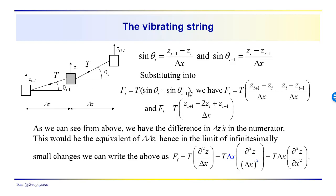The net upward force equals the tension times [(zᵢ₊₁ − zᵢ)/Δx − (zᵢ − zᵢ₋₁)/Δx]. Combining terms, we get T·(zᵢ₊₁ − 2zᵢ + zᵢ₋₁)/Δx. This is really a delta-delta-z — we have one delta-z and then another delta-z, and we take the difference between the two, giving us the equivalent of a second difference Δ(Δz).